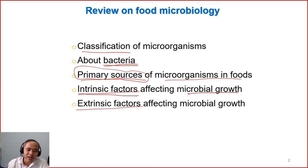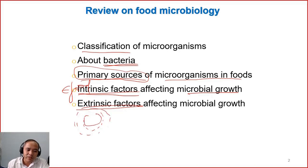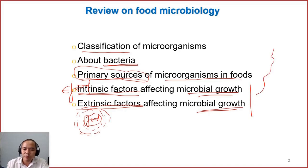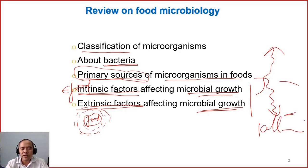Intrinsic factor means the parameters of the food itself. Extrinsic means the parameters and conditions of the surrounding environment of the food — the property of this environment also influences microbial growth. When we know this, it is important because if we want to stimulate them to grow, what can we do? If we want to inhibit them, what do we do? If we want to kill them, what do we do? So knowing this factor is important.